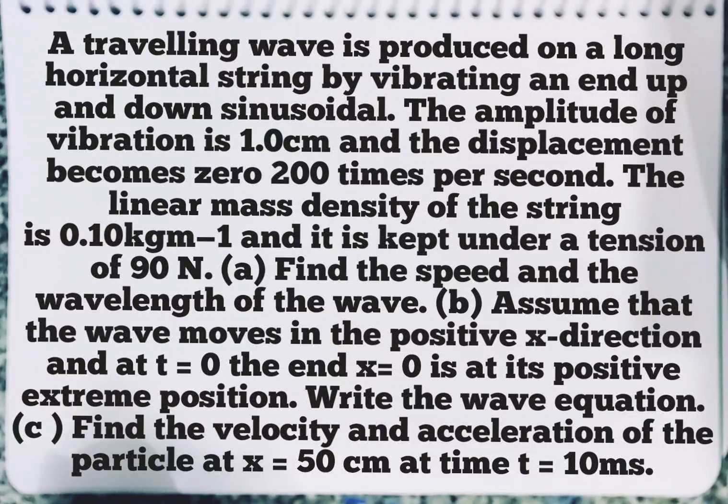The linear mass density of the string is 0.1 kg per meter and it is kept under tension of 90 N. First part, find the speed and the wavelength of the wave.